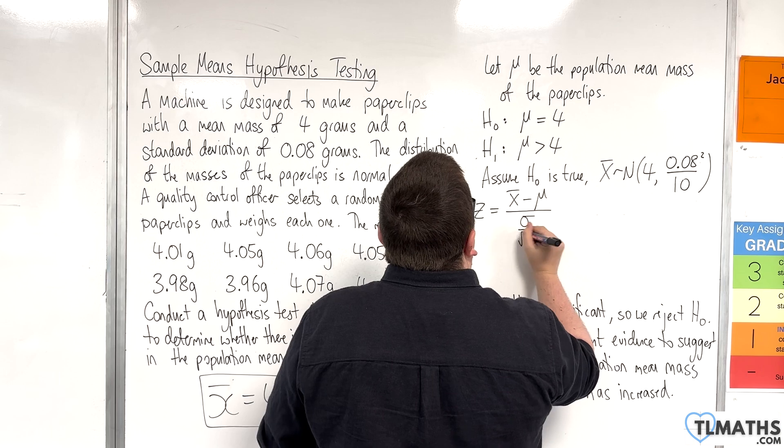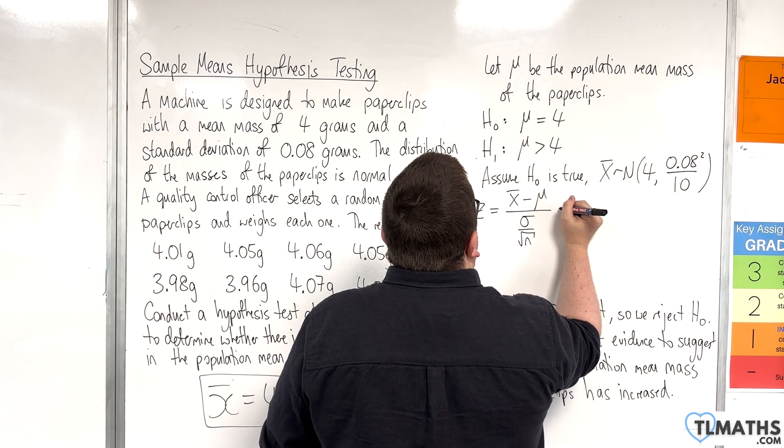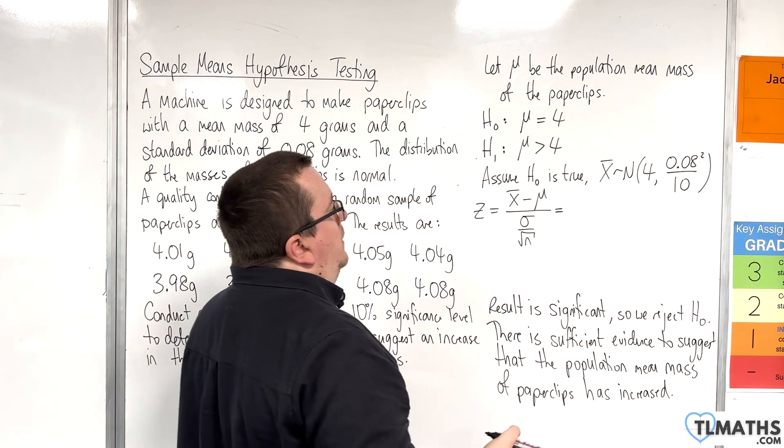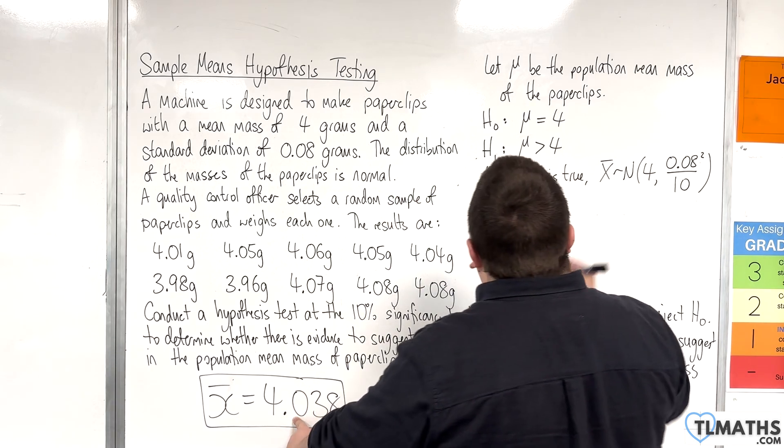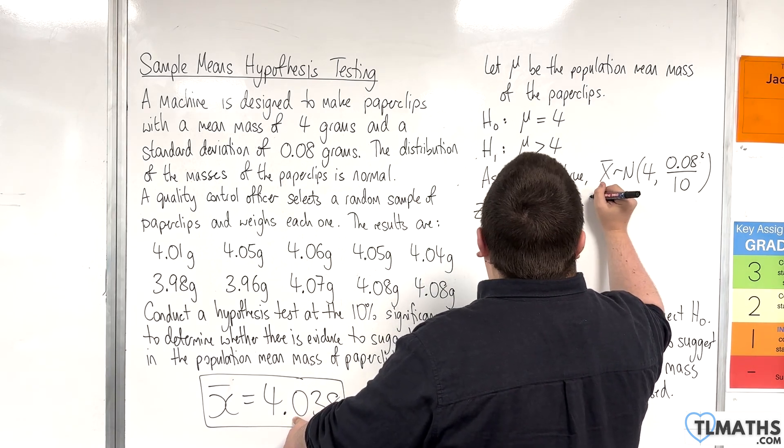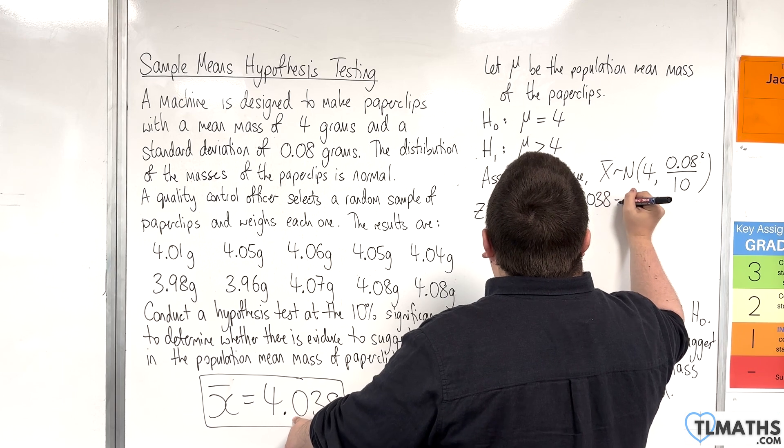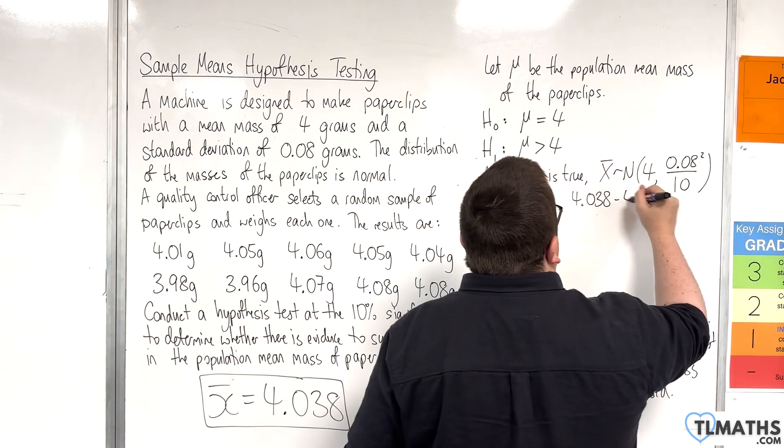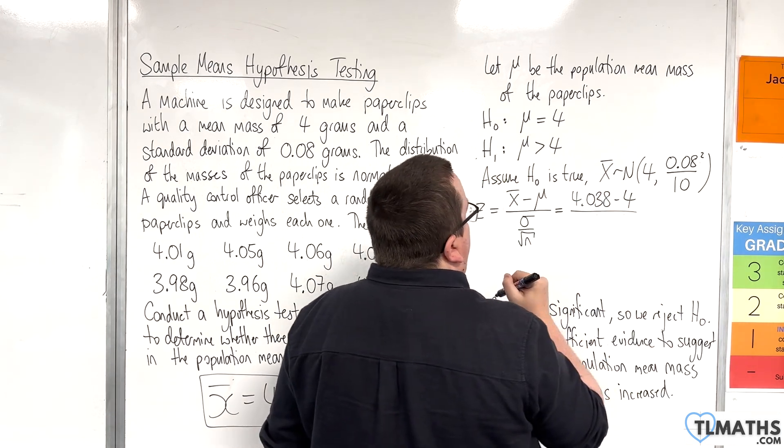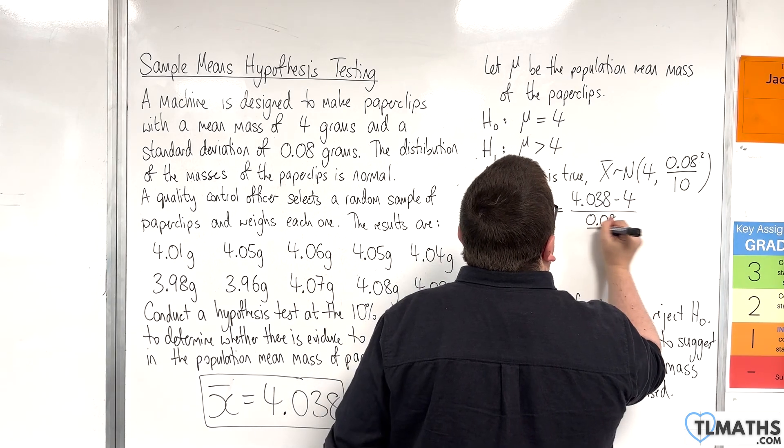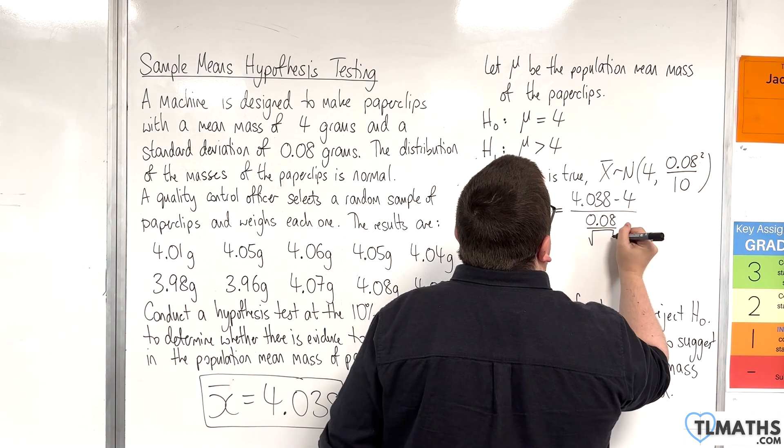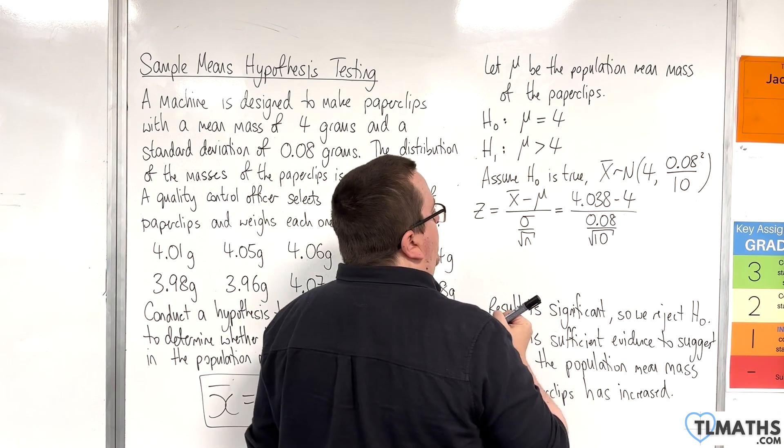So x̄ was the sample mean we calculated before, so 4.038, and we take away the mean μ which is 4, divided by the standard error. So 0.08 was the standard deviation divided by the square root of the sample size.